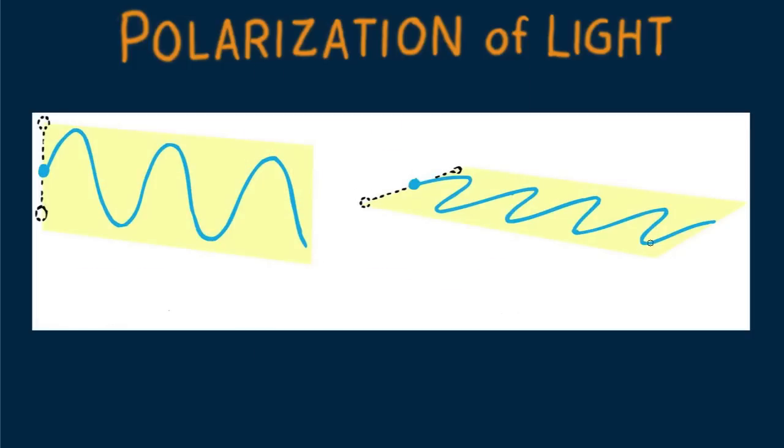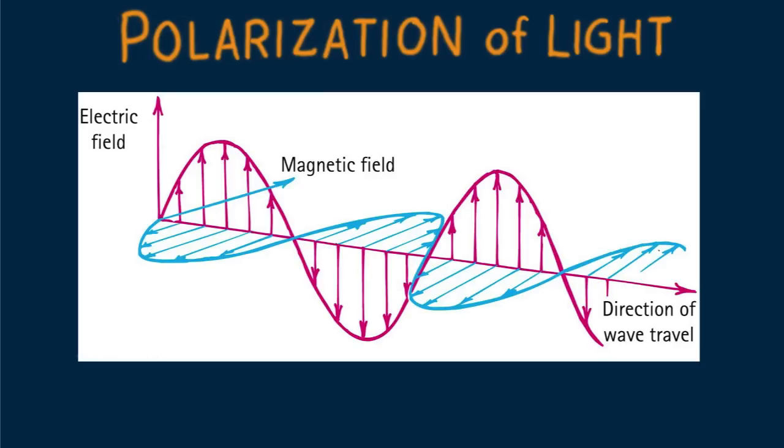If we think in terms of classical physics, meaning non-quantum, an electromagnetic wave is produced by a vibrating electron in an atom. Vertical electron vibration means the electric field is vibrating up and down, which emits light that is vertically polarized.